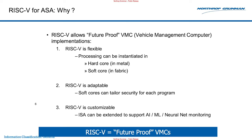RISC-V for this ASA — the obvious three reasons we've been hearing. But it allows me to future-proof our vehicle management computers, our flight computers. First, it's flexible: I can instantiate processing in hard cores in metal or in soft cores in fabric. It's adaptable: I can drop in soft cores and tailor my security to each different program. And it's customizable: I can extend the ISA so that in the future I can add AI, ML, and neural net type algorithms. In short, it really allows us to future-proof our VMCs.